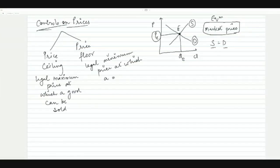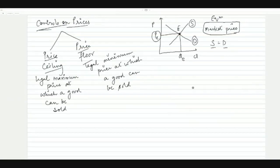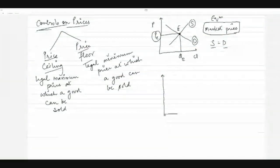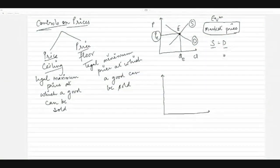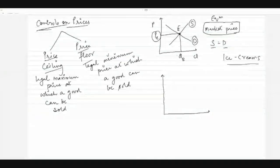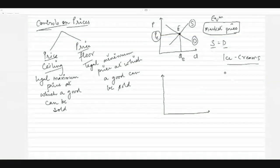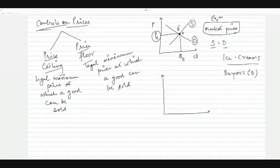Let's understand what we mean by legal maximum and legal minimum. Equilibrium prices are called market prices. Suppose this market represents the market for ice cream. It is possible that ice cream buyers are saying the market price of ice cream is too high and they cannot afford it.